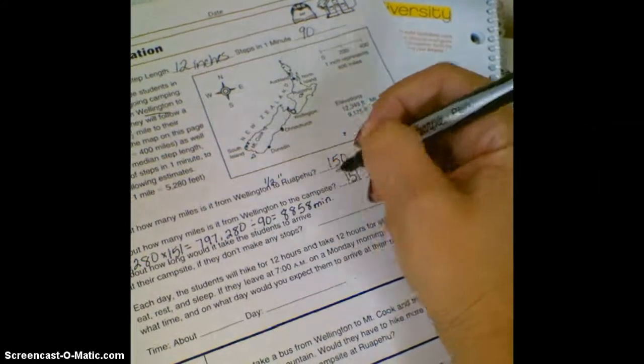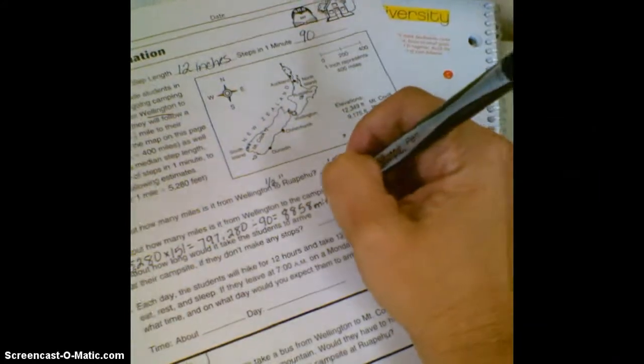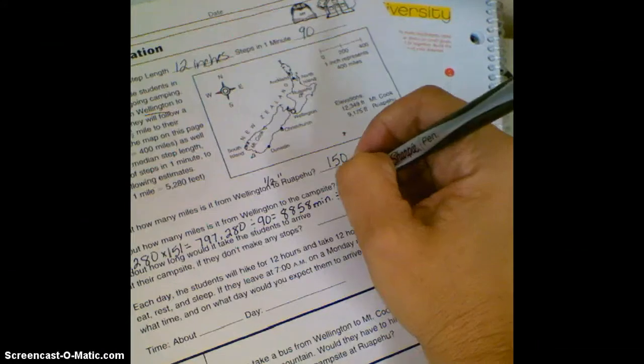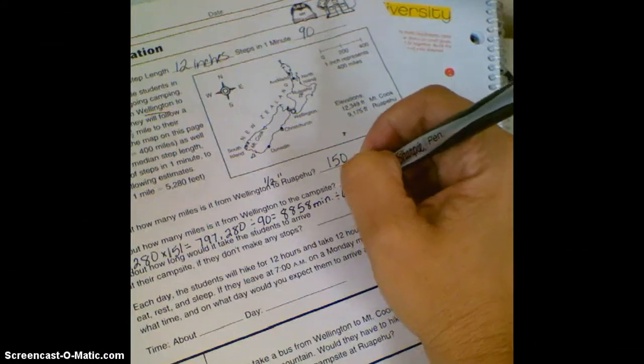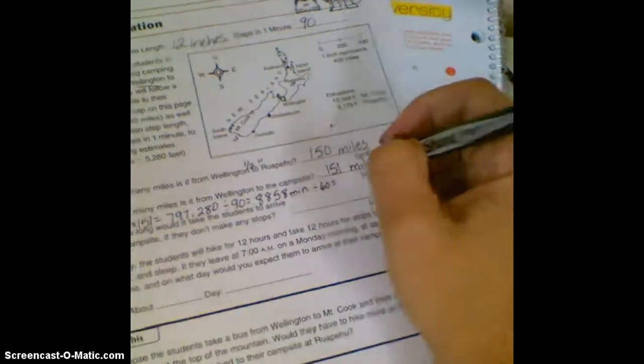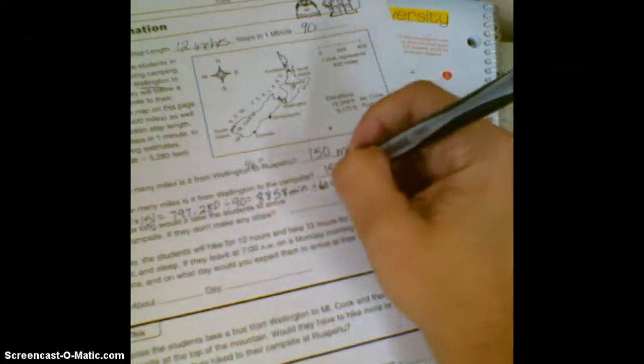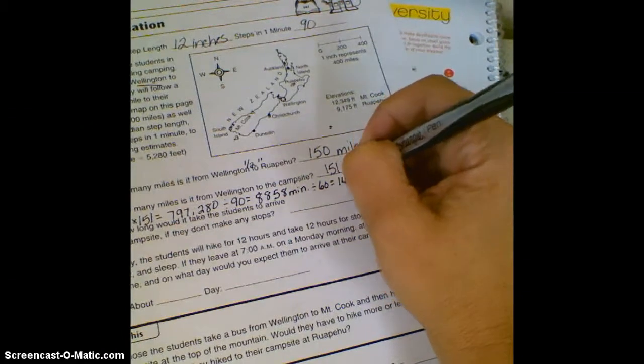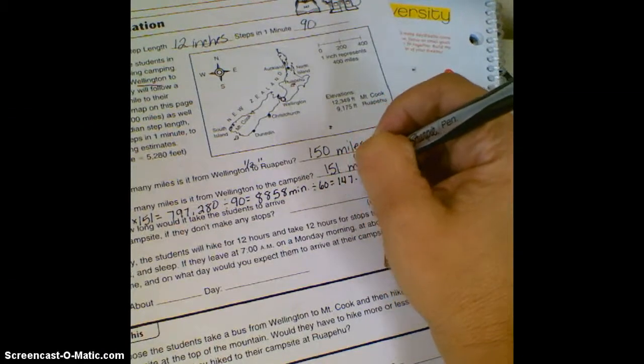To get there. Well that's a lot of minutes, so let's think again. How many minutes are in an hour so we can figure hours? About 60. So we'll divide by 60, and if you do on your calculator you should get 147.6.